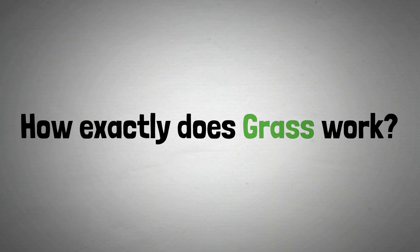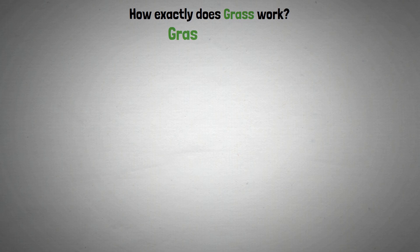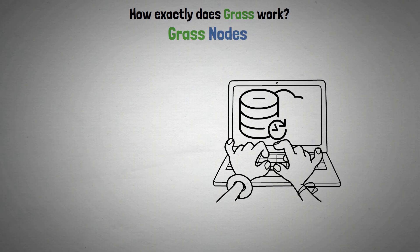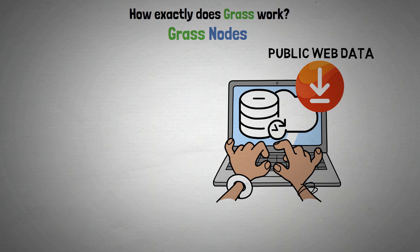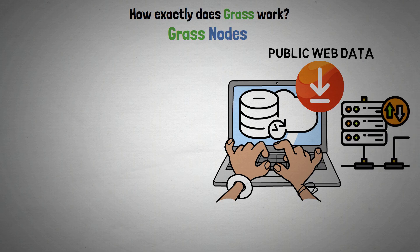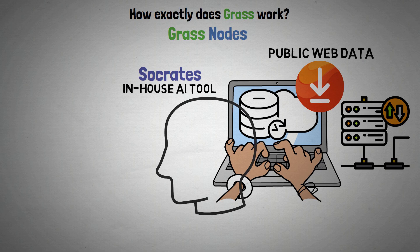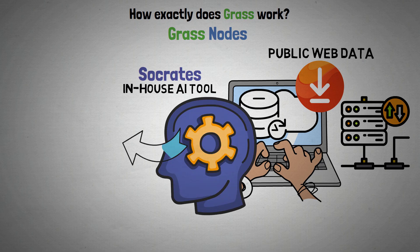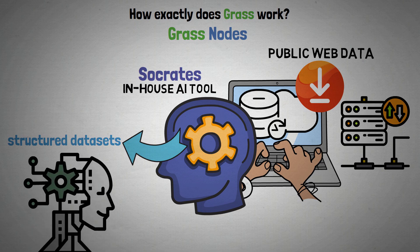Now let's look at how exactly GRASS works. GRASS nodes: users launch a desktop application that scrapes public web data using idle bandwidth. Socrates, GRASS's in-house AI tool, processes this data and turns unstructured data into structured data sets that can be used for AI training.